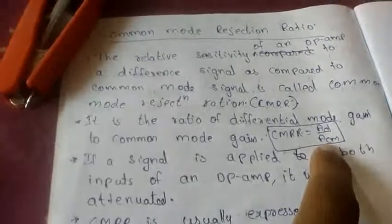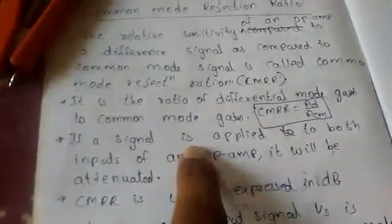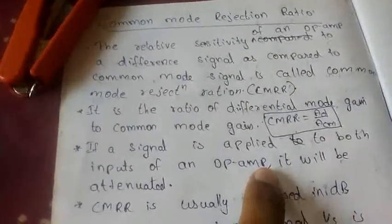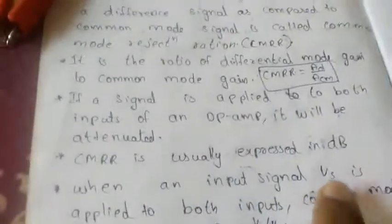If a signal is applied to both inputs of an op-amp, it will be attenuated. The CMRR is usually expressed in dB (decibels).